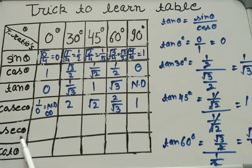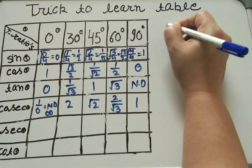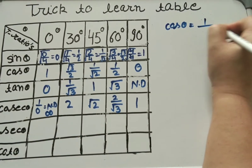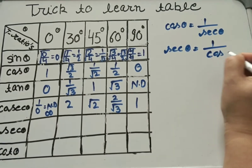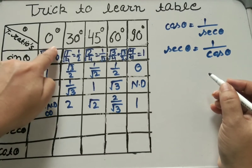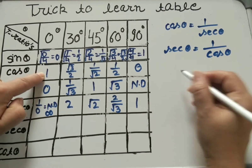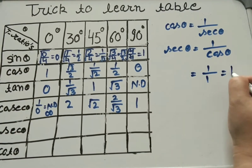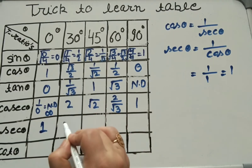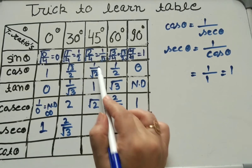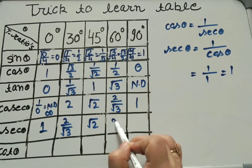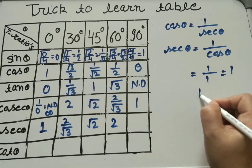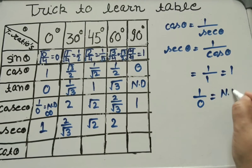Next, secant theta. Secant theta is the reciprocal of cos theta, so secant theta = 1/cos theta. For sec 0°: cos 0° = 1, reciprocal is 1. For 30°: reciprocal of √3/2 is 2/√3. For 45°: reciprocal of 1/√2 is √2. For 60°: reciprocal of 1/2 is 2. For 90°: reciprocal of 0 is 1/0, not defined.